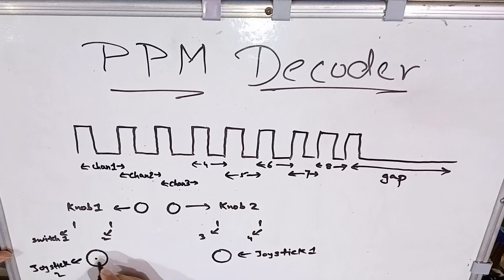Our PPM signal will have a certain gap. In our case it would be 7.5 milliseconds. Each channel will have its own space of pulse from one to eight. In our transmitter we have two joysticks, two knobs, and four switches.